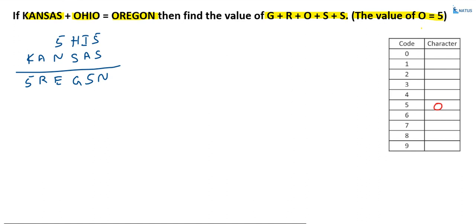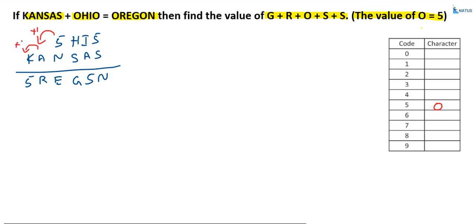One carry must come from the fourth column to the fifth column, and also from the fifth to the sixth column. Because K and O are not equal — each letter has an individual value. So one carry over means one plus K equals 5, giving K equal to 4.